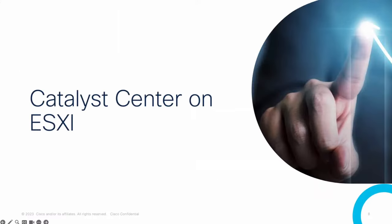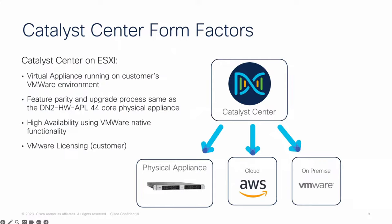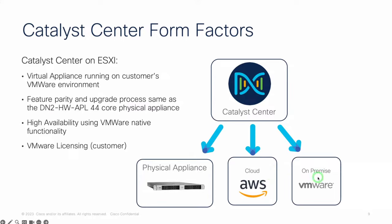Catalyst Center on ESXi in version 2.3.7 will become available quite soon. Many of you may have heard about this new Catalyst Center naming — this is formerly known as Cisco DNA Center. It is a great network management tool that provides you with agility to control and supervise your network, giving you great insights from assurance and allowing you to automate many tasks.